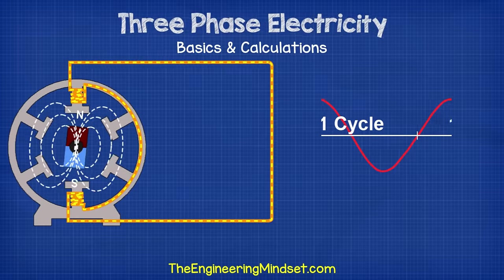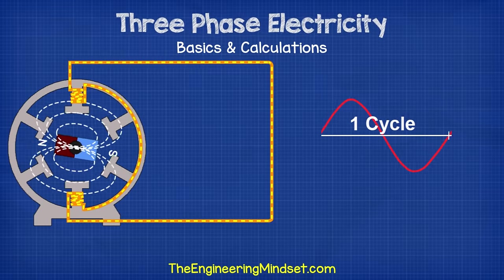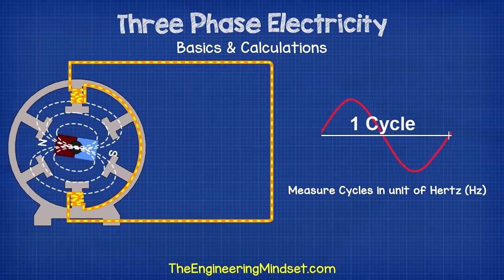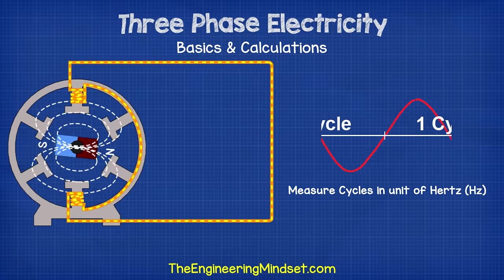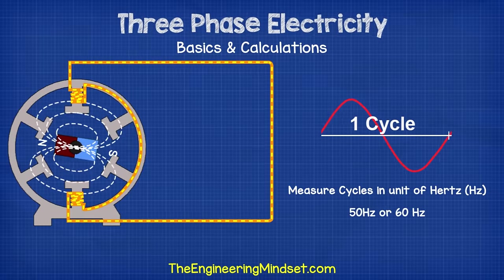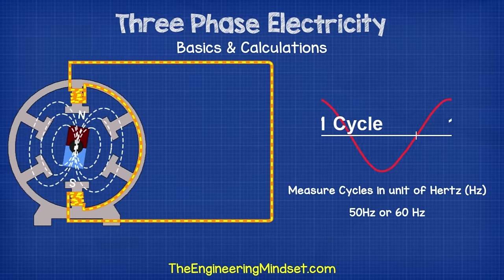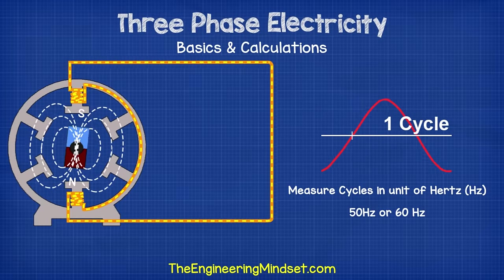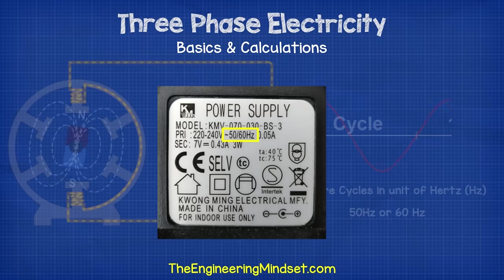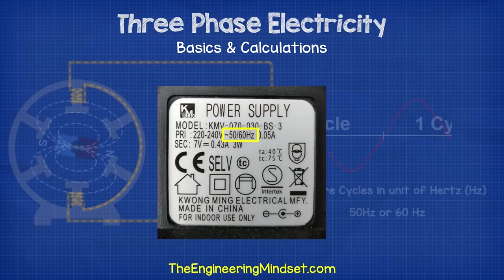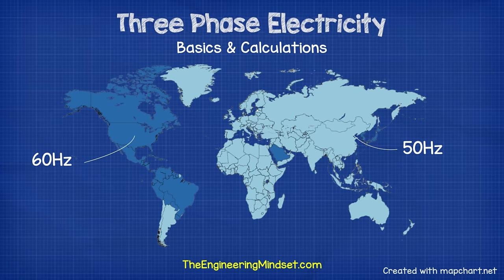When the magnet completes one full rotation, the electrons will have moved all the way forwards and then all the way back to their original position — we call this a cycle. We measure cycles in the unit of hertz (Hz). If you look on your electrical devices you'll see either 50 hertz or 60 hertz — that's the manufacturer telling you what type of supply the equipment needs. Each country uses either 50 hertz or 60 hertz. North America, some of South America, and a couple of other countries use 60 hertz; the rest of the world uses 50 hertz.